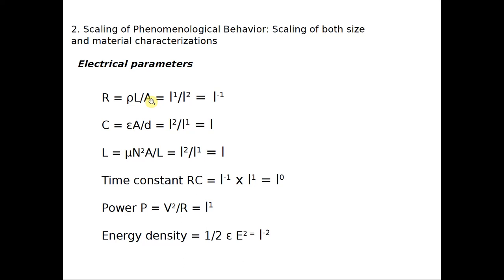For the proportionality relation of resistance: length is proportional to L to the power 1, and area is proportional to L squared. So resistance scales as L over L squared, giving L to the power of minus 1, or R proportional to 1 over L. That means if I reduce the size of the material, resistance is going to increase because it is inversely proportional to the length scale.